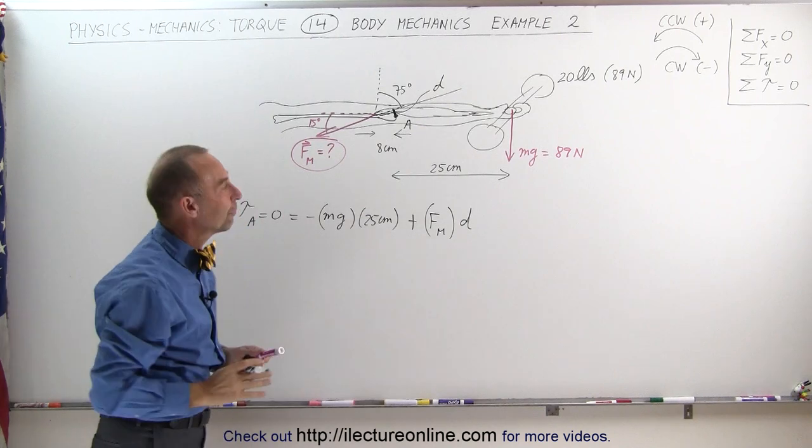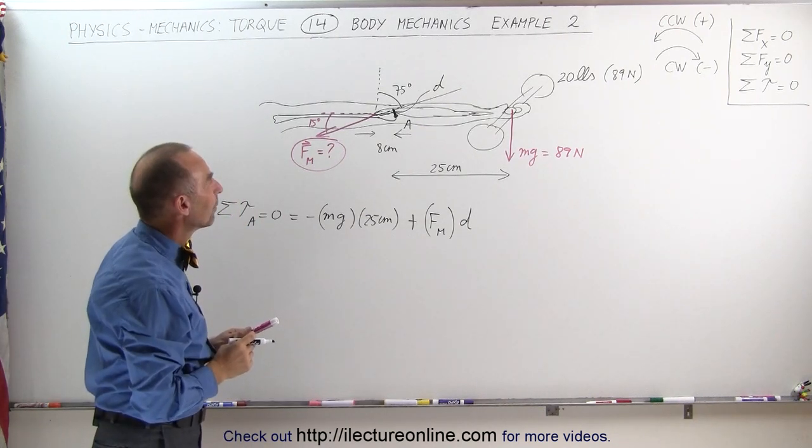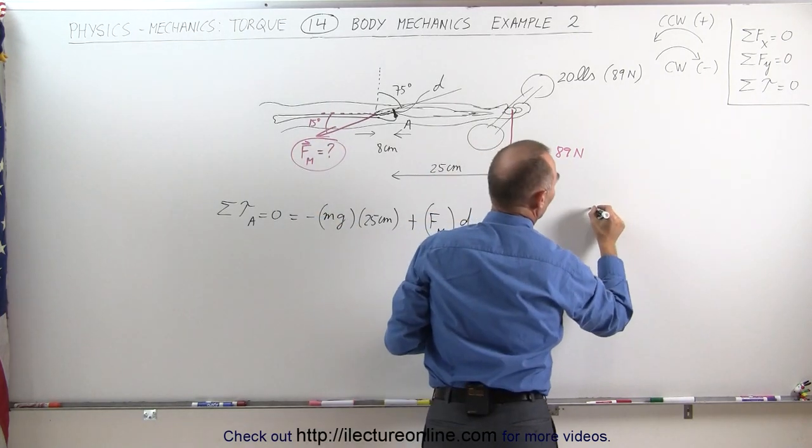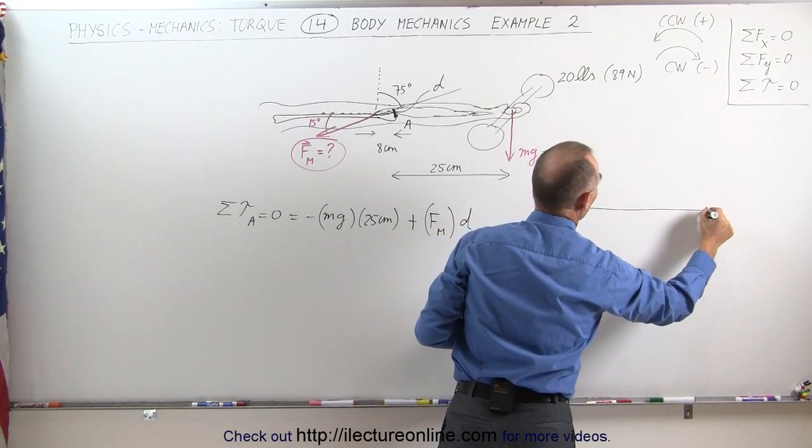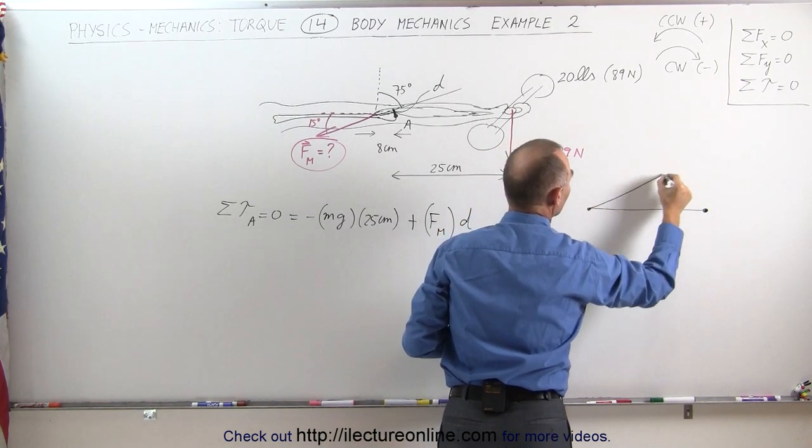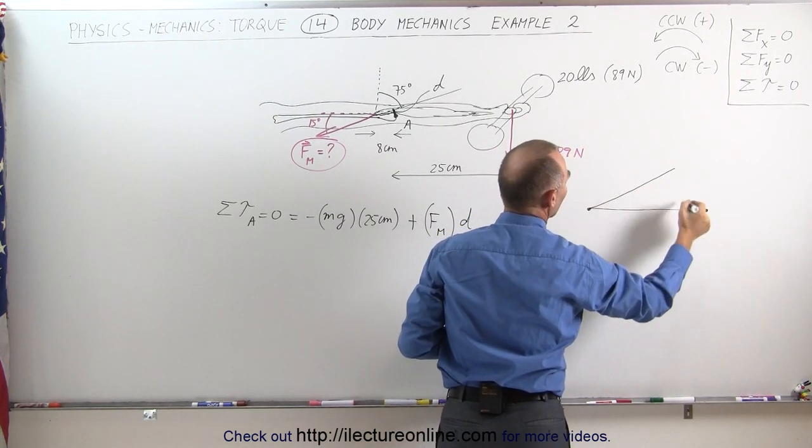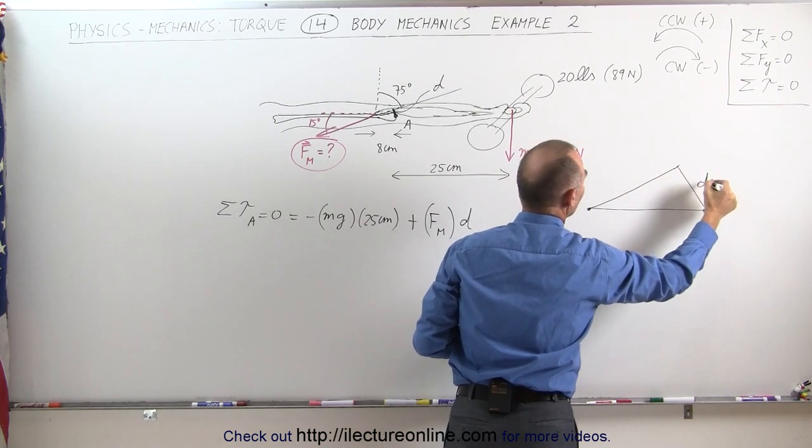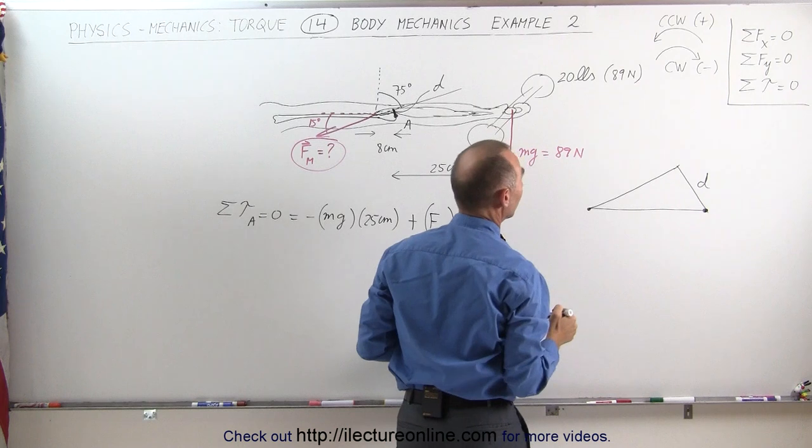Here's the horizontal distance from the pivot point to where the muscle is attached. The muscle is pulling in this direction, and then we have the perpendicular distance right here, which is called D. That's the distance we're looking for, distance D.